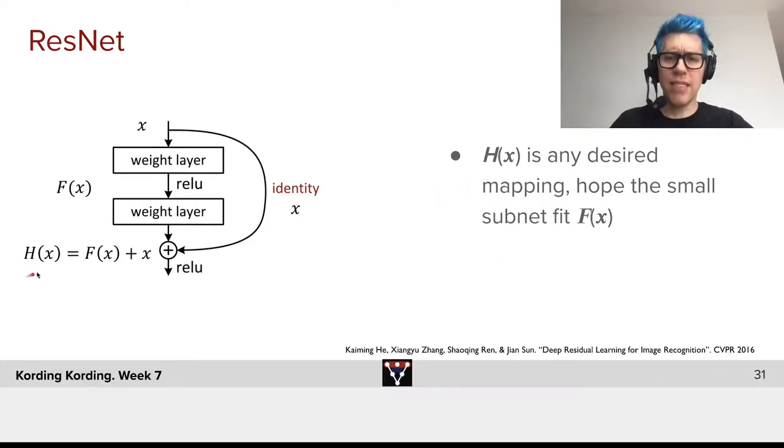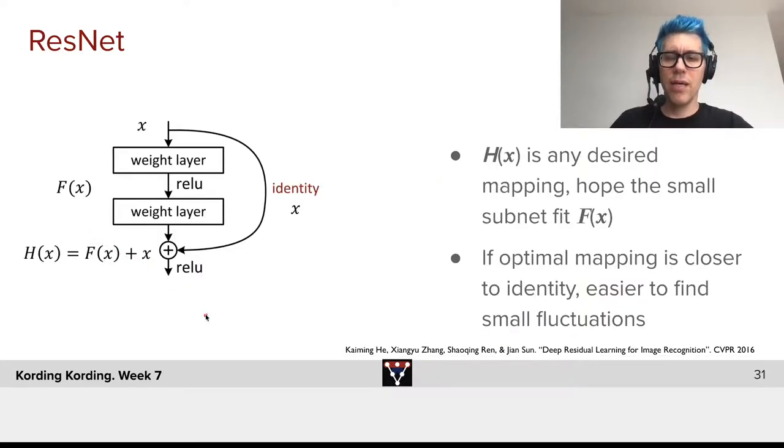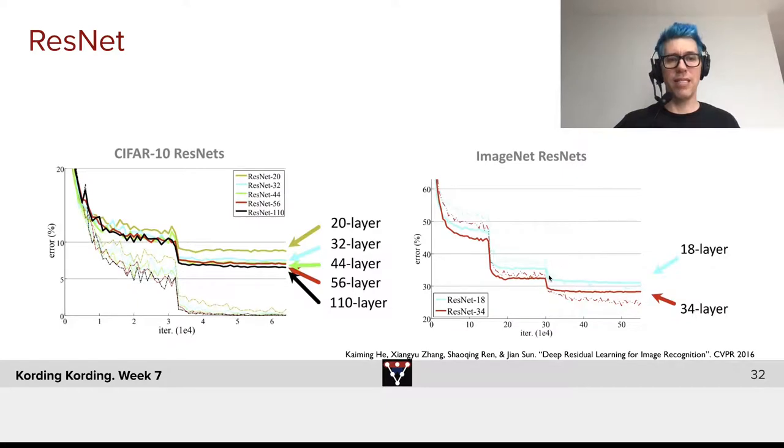H, what we have here, is the desired mapping, and we hope that we can fit this with a small local network. If the optimal mapping is closer to the identity, it's easier to find those relevant small fluctuations. If you have a very deep network, each layer doesn't need to do all that much to its input. It might be sufficient to do relatively small changes, and therefore, it's intuitively desirable to use something like ResNet.